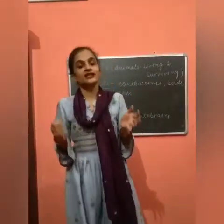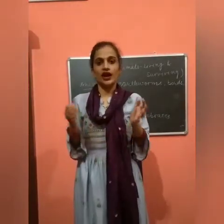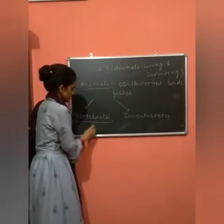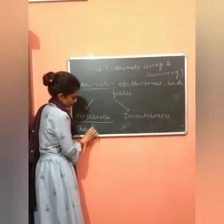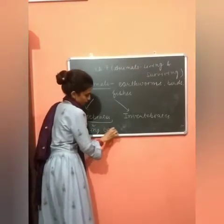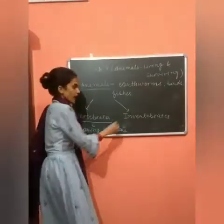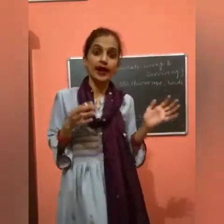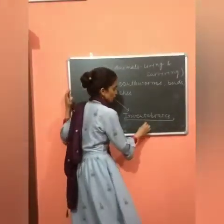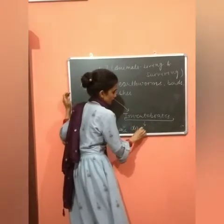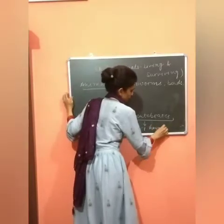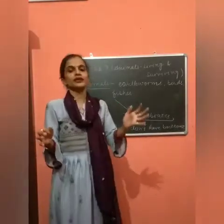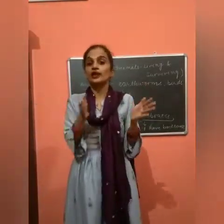Animals that have backbone are called vertebrates, and the animals which do not have backbone are called invertebrates. So animals can be divided into these two main categories - vertebrates and invertebrates.